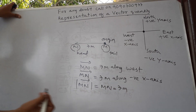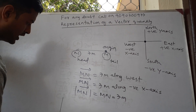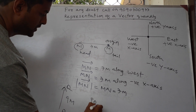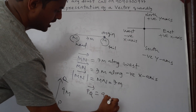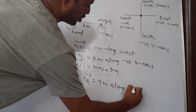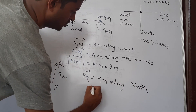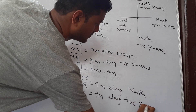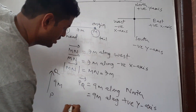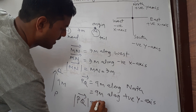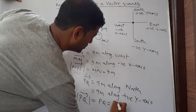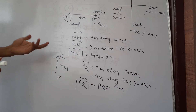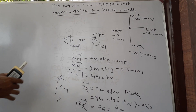The magnitude of vector MN is 7 meters. Similarly, let's say vector PQ is 9 meters. So vector PQ equals 9 meters along north, which is also equal to 9 meters along positive y-axis. The magnitude of vector PQ is 9 meters.